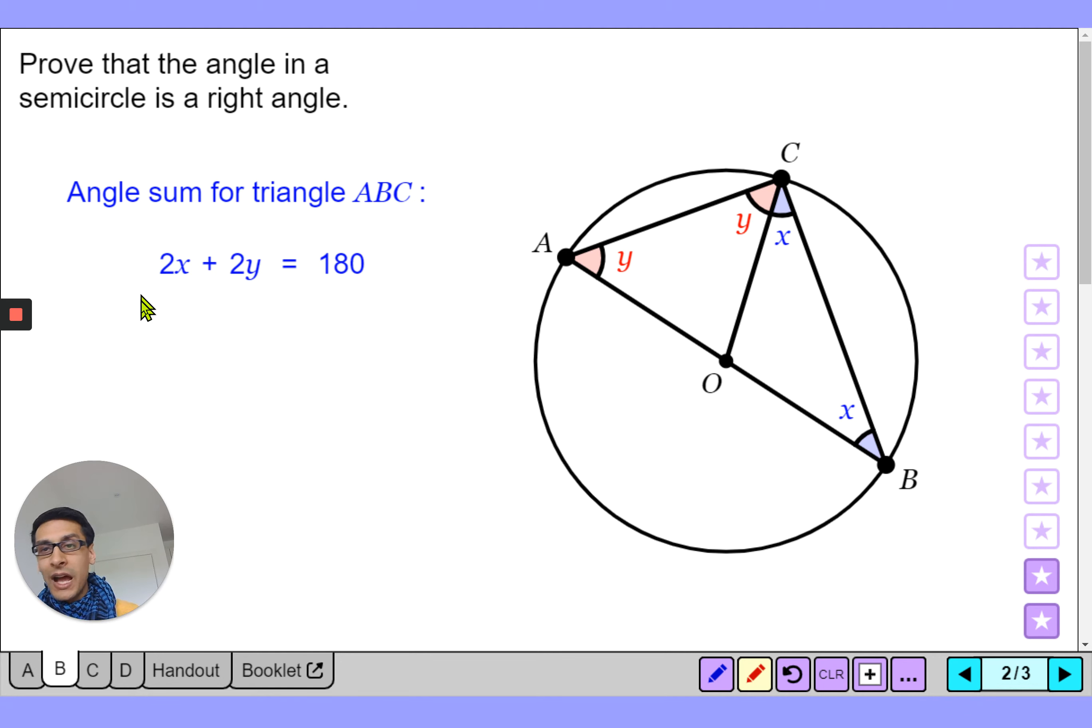And then you can factorize the two out so you end up with two brackets x plus y, and then if you divide both sides by two you end up with x plus y is 90. And then from the diagram you can see no matter how I would have drawn that triangle, my x plus y is going to end up being that angle there and it's going to end up being 90 degrees. And that is your proof.